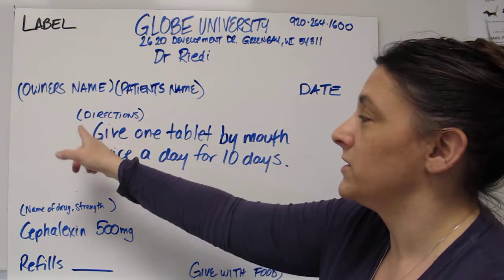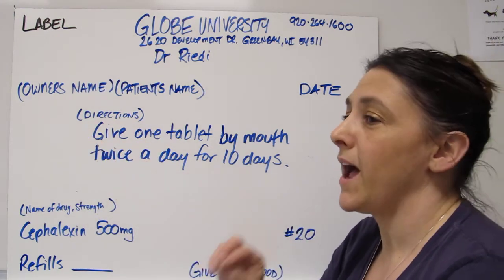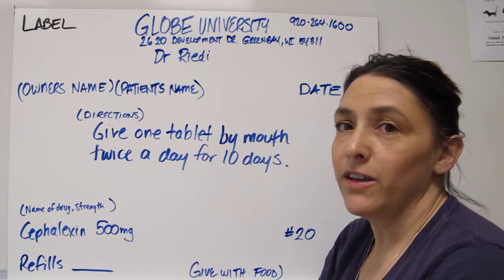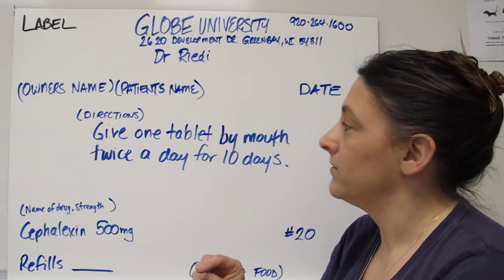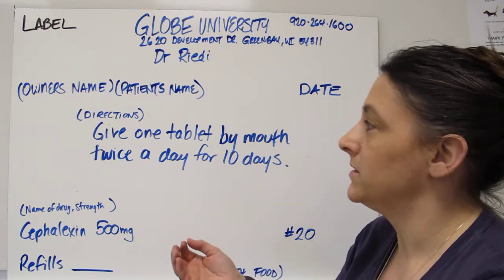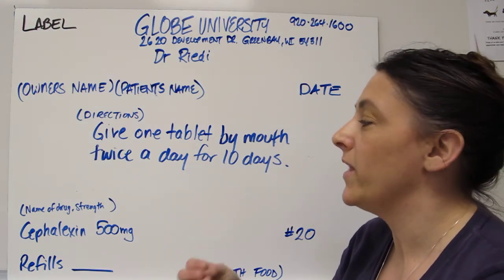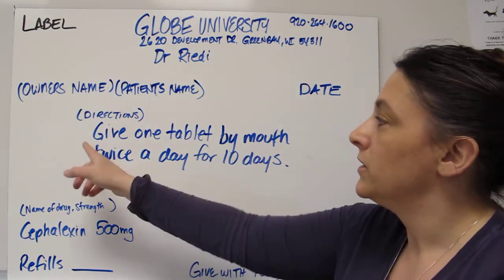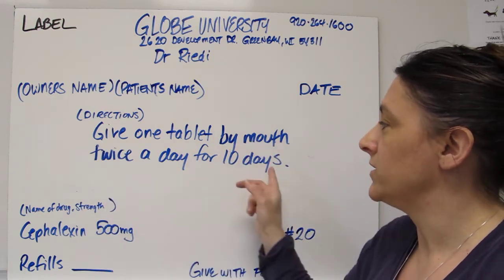And then you're going to write the directions. You want to make sure that you write out the directions. Do not use abbreviations. Do not use any of the PO. Clients don't know what that means. So you need to make sure that the label is clear and specific to what the client needs to give. So give one tablet by mouth twice a day for 10 days.